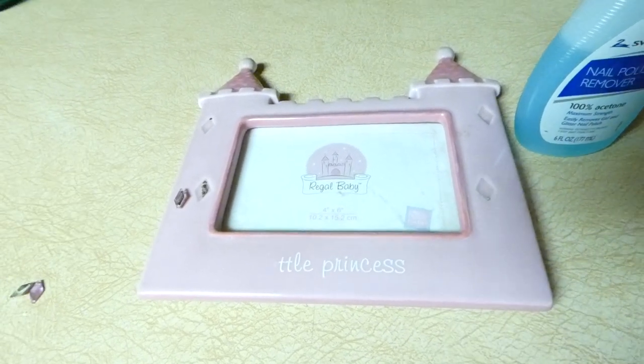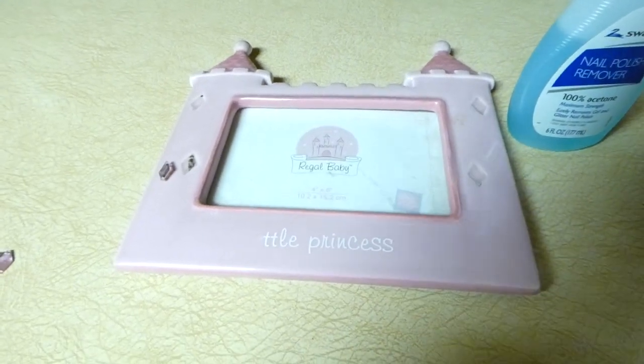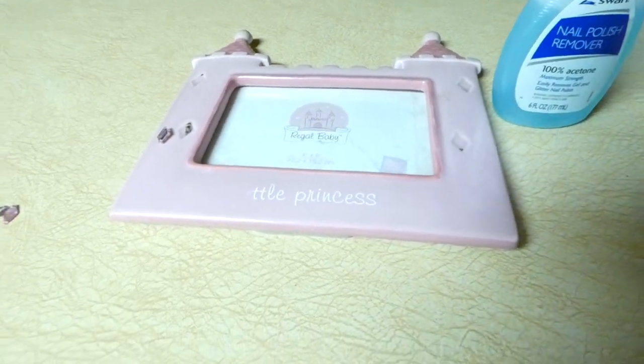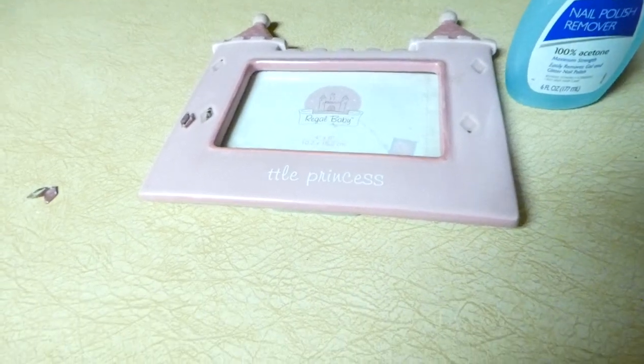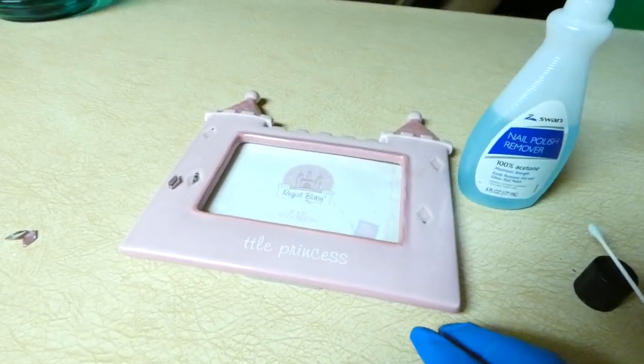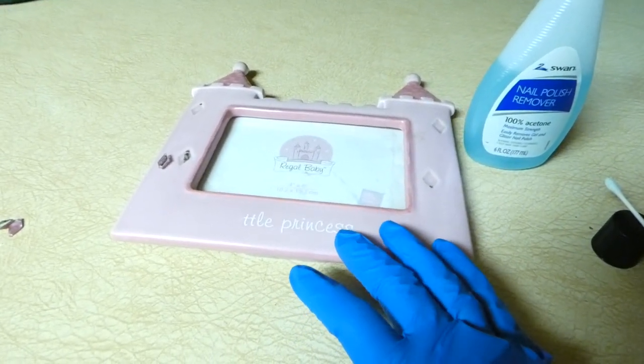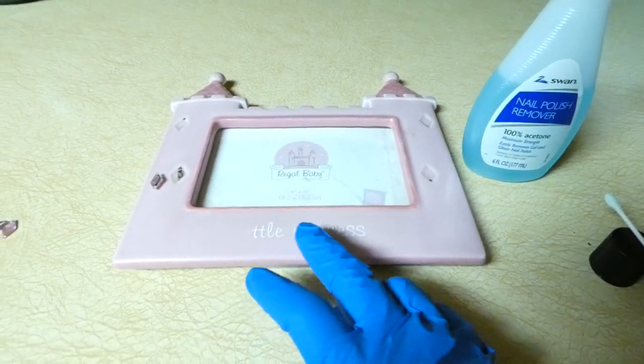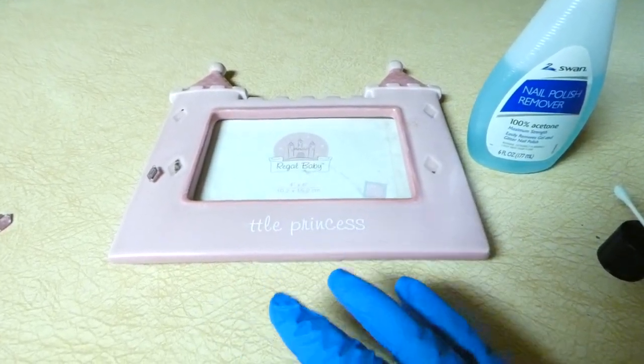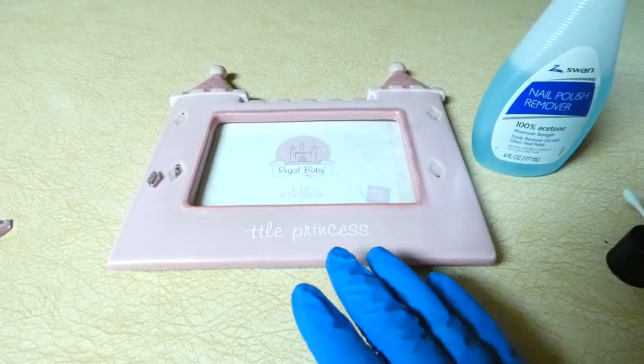Hello friends. I've done similar videos to this before, but I wanted to do this one specifically for glass and frames. I've done removing screen printing or names or something on other items that you don't want.